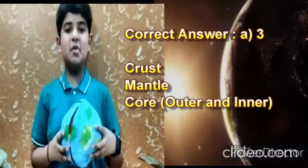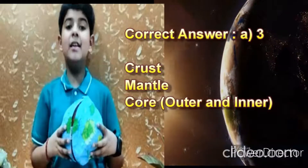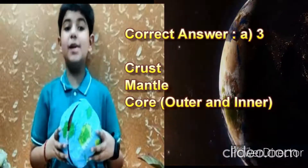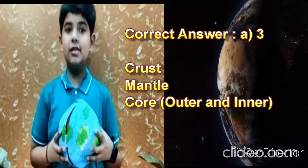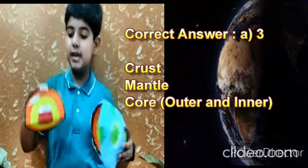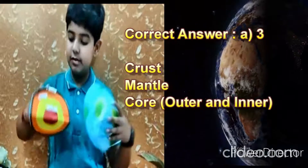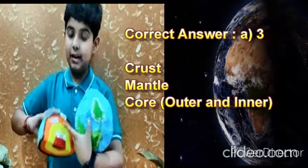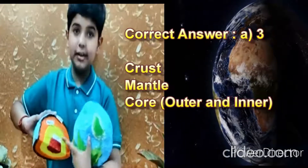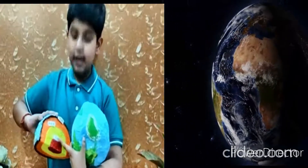Yes, you are correct. The answer is A: 3. The Earth is divided into three main layers — crust, mantle, and core, with inner and outer core.